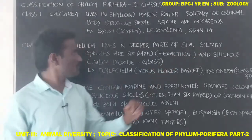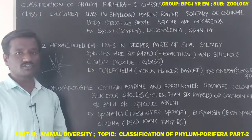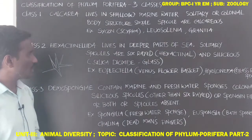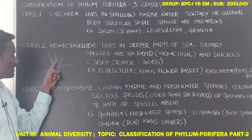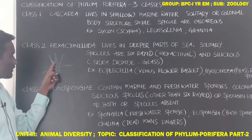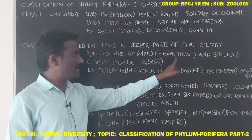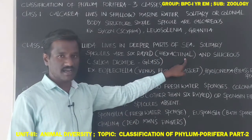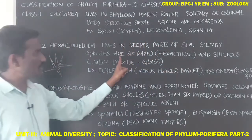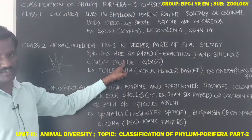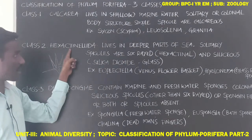Hexactinellida sponges are solitary. Their spicules are six-rayed, meaning each spicule has a six ray-like arrangement. Because of this six ray-like structure, the class is named Hexactinellida — 'hexact' referring to the six-rayed spicules present in these sponges.